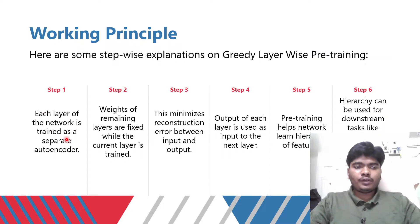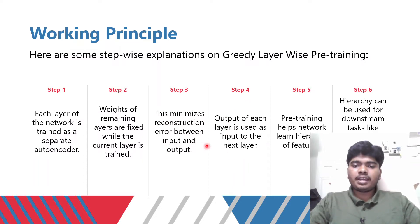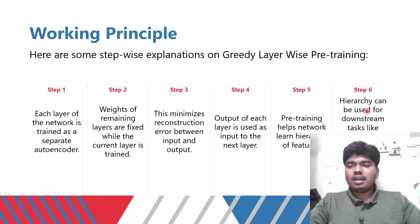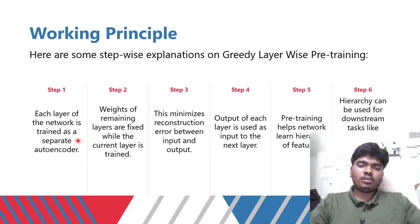Looking at the working principle: each layer of a network is trained as a separate autoencoder, while the weights of the remaining layers are fixed. This minimizes reconstruction error between the input and output. The output of each layer is used as input to the next layer, and pre-training helps the network learn a hierarchy of features, which can be used for downstream tasks like classification and regression.